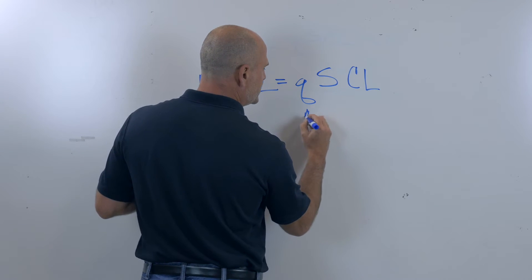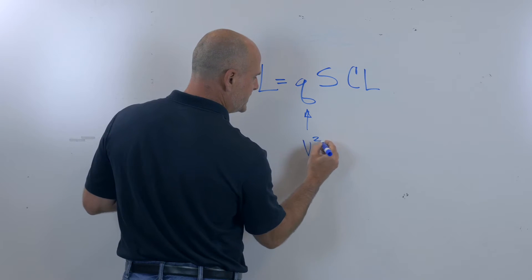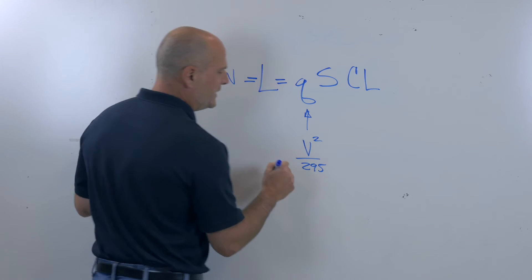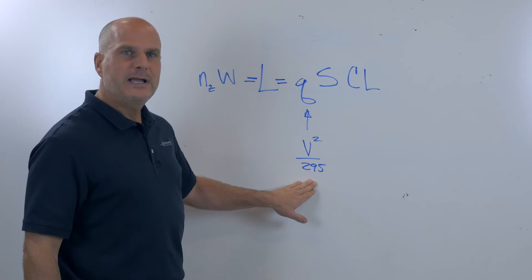Q is dynamic pressure. The way engineers do it, for the most simplistic terms, is V squared over 295, and that's equivalent airspeed in knots. This comes out to pounds per square foot.